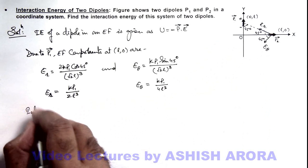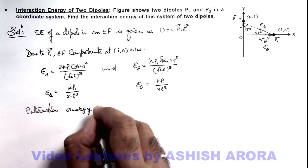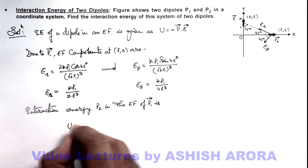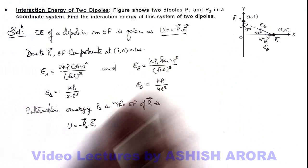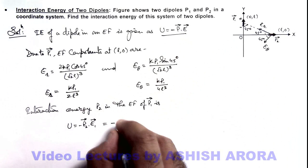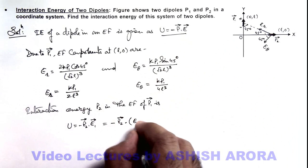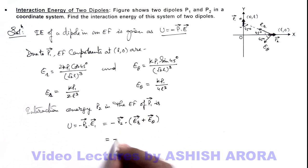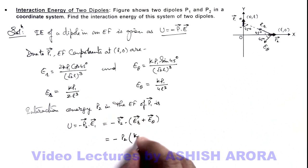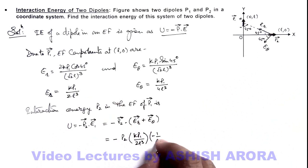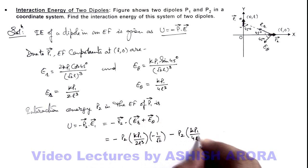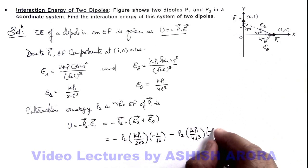Now we can write down the interaction energy of p2 in the electric field of p1. This is written as U = -p2·E1. This can be written as minus of p2 vector dot product with (Er vector + Eθ vector). Taking the dot product: -p2·Er = p2·Er·cos135°, so it is p2 × (kp1 / 4l³) × cos135° = p2 × (kp1 / 4l³) × (-1/√2). Similarly, -p2·Eθ = (kp1 / 4l³) × (-1/√2).